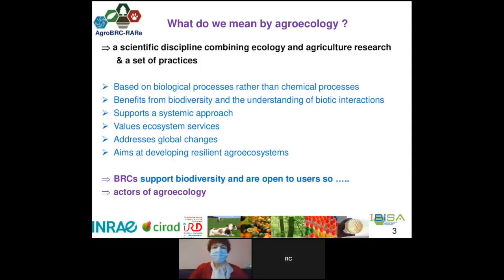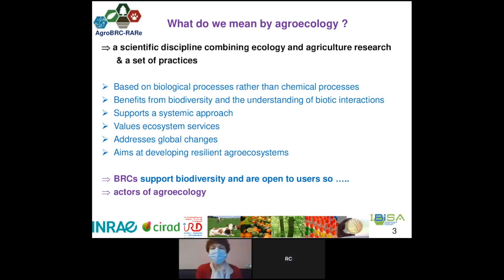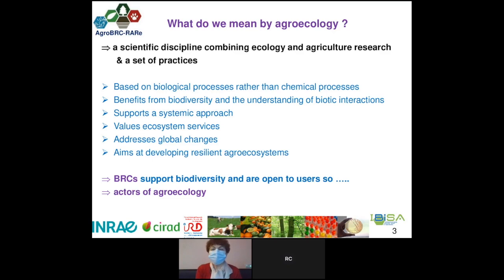What do we mean by agroecology in this webinar? Agroecology is the scientific discipline combining ecology and agriculture research, and also a set of practices. It is based on biological processes rather than chemical processes, it benefits from biodiversity and the understanding of biotic interactions, it supports a systemic approach of agriculture, it values ecosystem services, aims to address global changes, and aims at developing resilient agroecosystems.